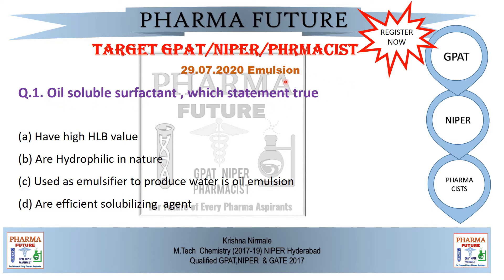Question 1: Oil-soluble surfactant — which of the following statements is true? Option A: it has a high HLB value. Option B: they are hydrophilic in nature. Option C: used as an emulsifier to produce water-in-oil emulsion. Option D: acts as an emulsifying and solubilizing agent.